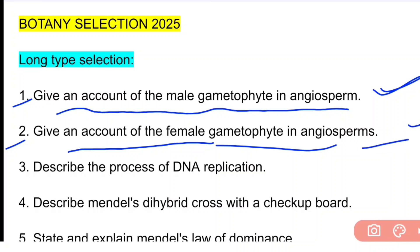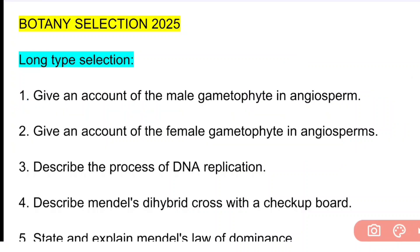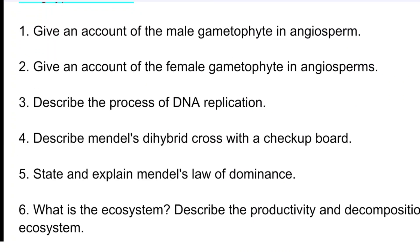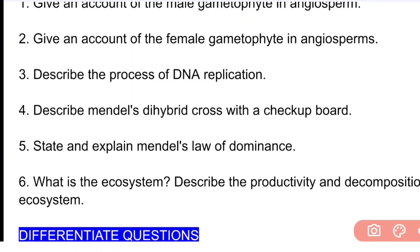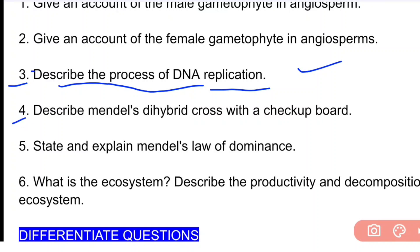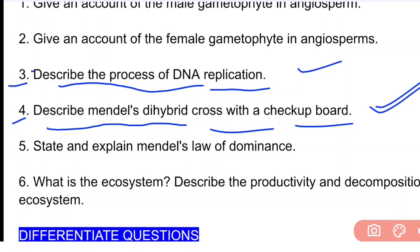The fourth important question is to describe Mendel's dihybrid cross with a checkerboard. The fifth important question is to state and explain Mendel's law of dominance.